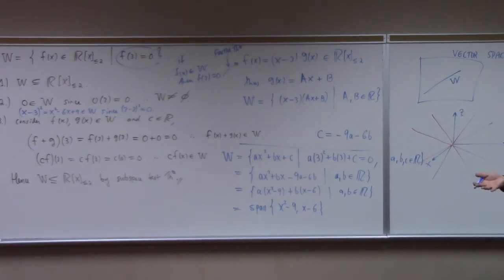Oh, by the way, the span notation, still true, still works for abstract vector spaces just like it did before. I only talked about spans of column vectors up to this point, but we can just as well take the span of matrices or polynomials or other things. It has the same meaning. It's a set of all finite linear combinations of x squared minus 9 and x minus 6.